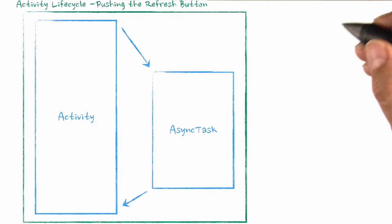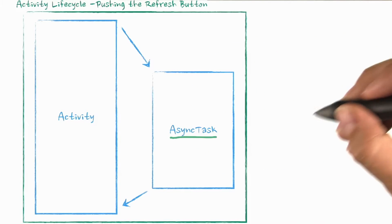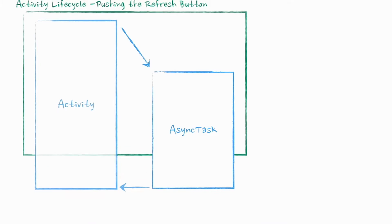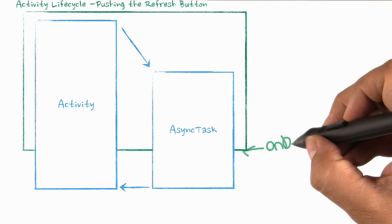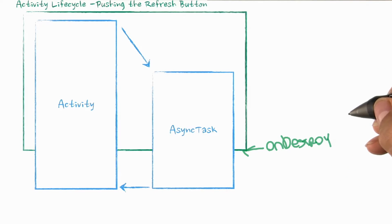Remember back in lesson two, when Catherine used an async task hooked up to a refresh button to update our data. Reto talked about how that was a bad idea, because the async task is not tied to the activity life cycle. The virtual machine will hold on to the activity object as long as the async task is running, even after Android has called onDestroy for the activity and expects it to be discarded.